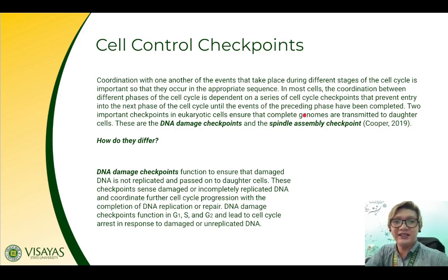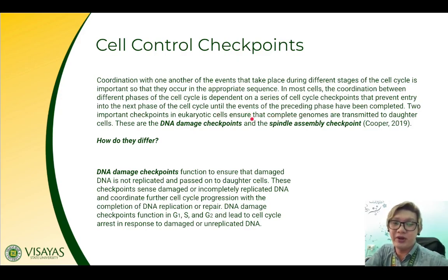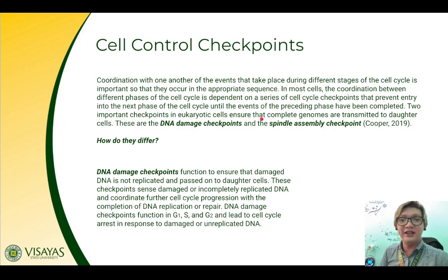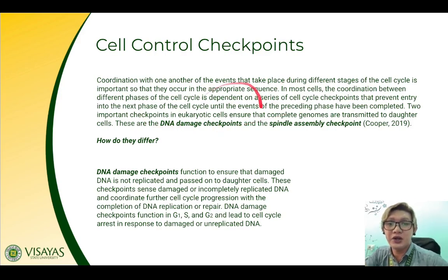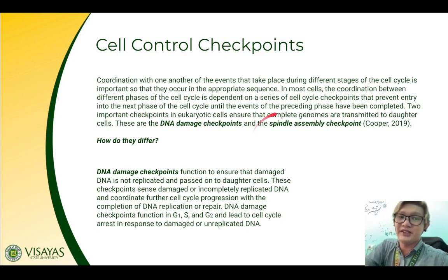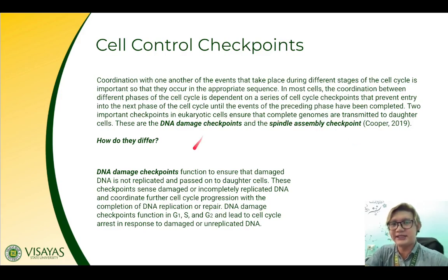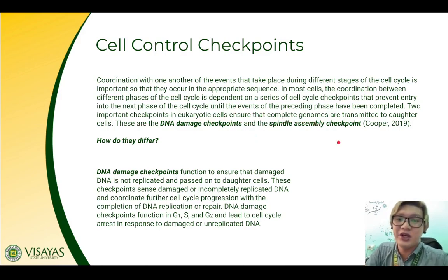Coordination of the events that take place during different stages of the cell cycle is important so that they occur in the appropriate sequence. In most cells, coordination between different phases of the cell cycle is dependent on a series of cell cycle checkpoints that prevent entry into the next phase until the events of the preceding phase have been completed. Two important checkpoints in eukaryotic cells ensure that complete genomes are transmitted to daughter cells: the DNA damage checkpoints and the spindle assembly checkpoints.